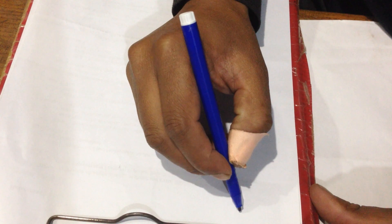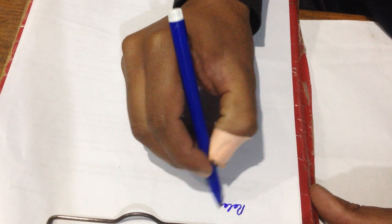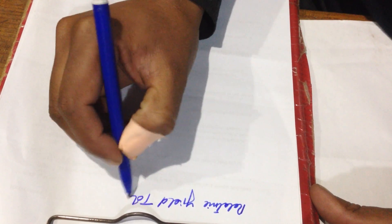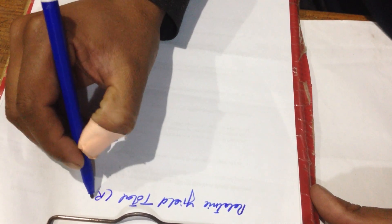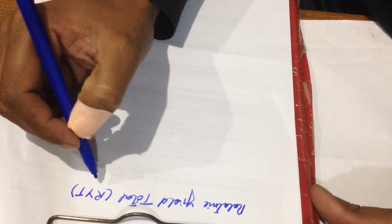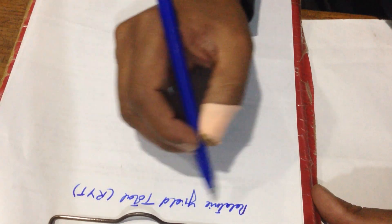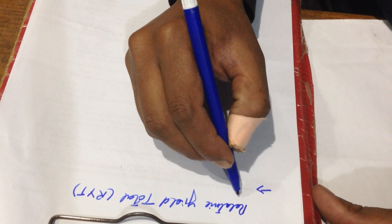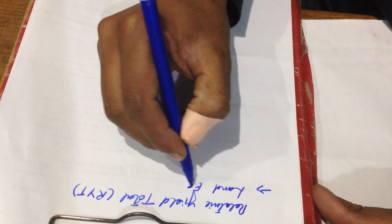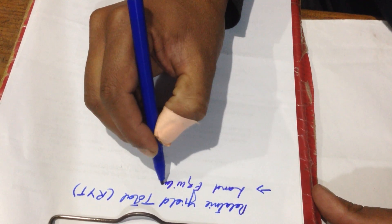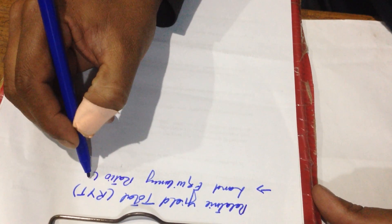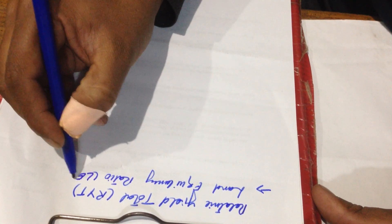Bismillah ar-Rahman ar-Rahim. Dear friend, today we will discuss relative yield total, RYT. Another term used for this is the land equivalency ratio, denoted by LER.